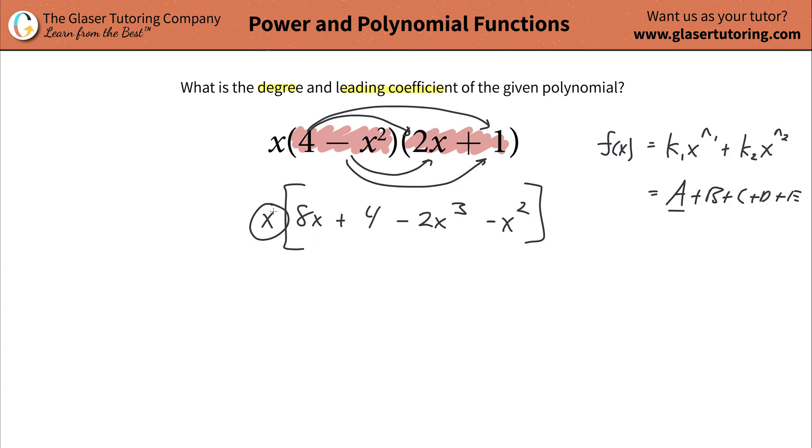But the only problem is, I still have this x kind of be multiplied. No big deal. All we're going to do is we're going to distribute now this x to everything.